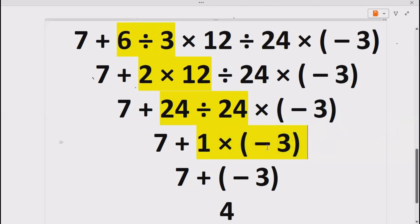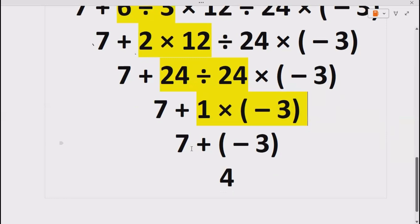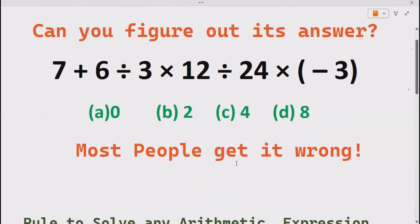So 1 multiplied by minus 3 gives us minus 3, and 7 plus minus 3 gives us 4. The correct answer is part C.